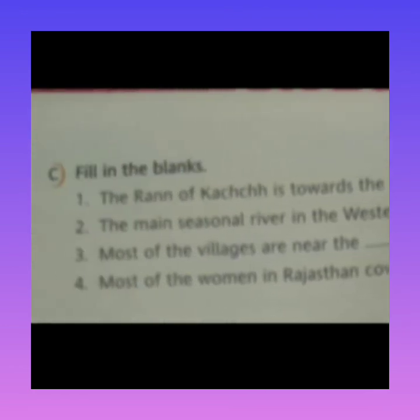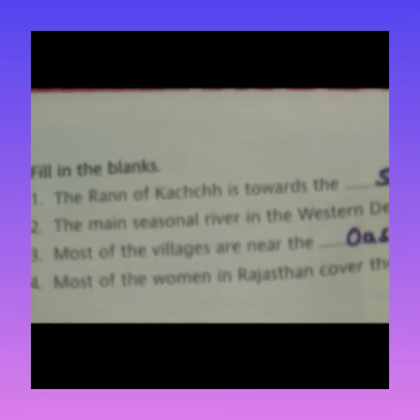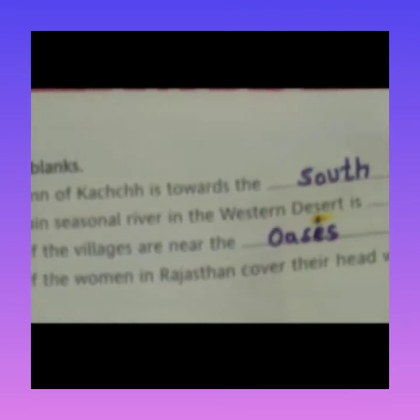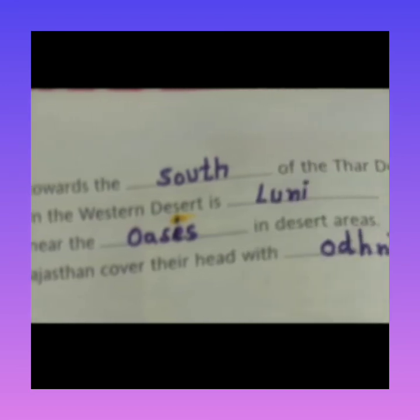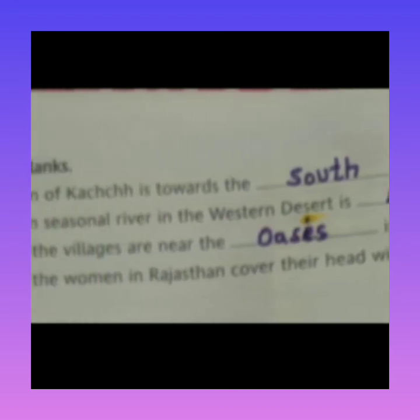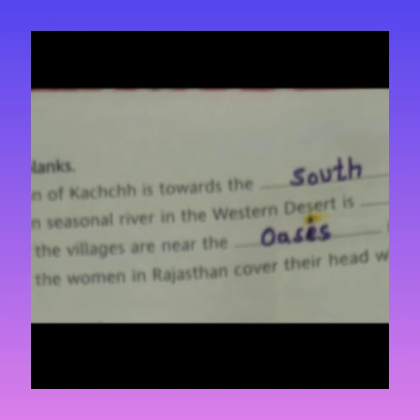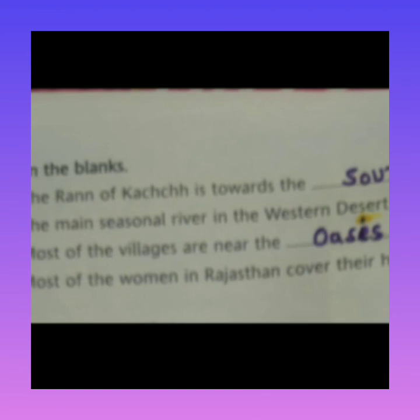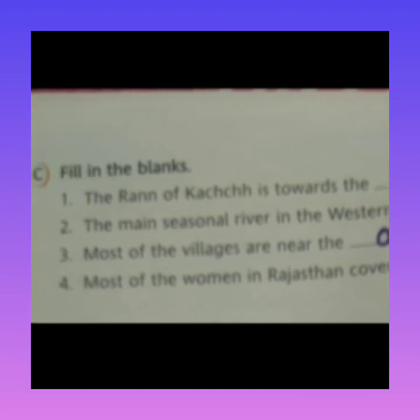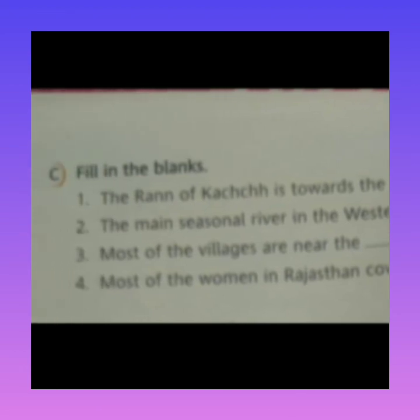Next blank: most of the villages are near the oasis in the desert area — in the desert area, most villages are located near oases. Students, please write this clearly. The spelling is O-A-S-I-S — oasis.